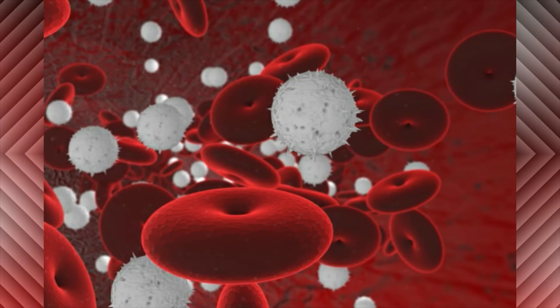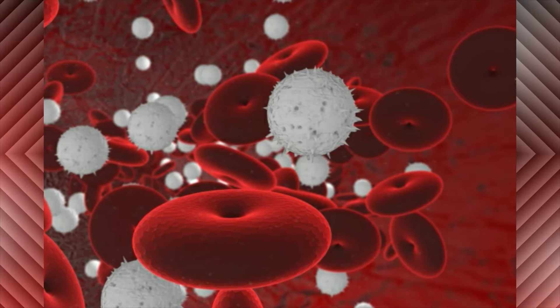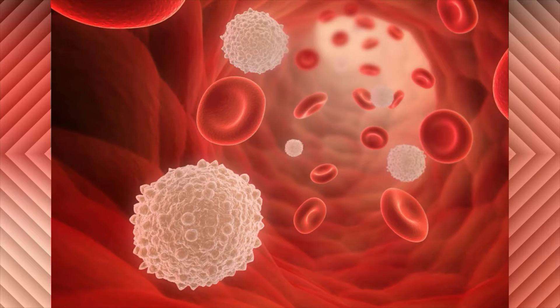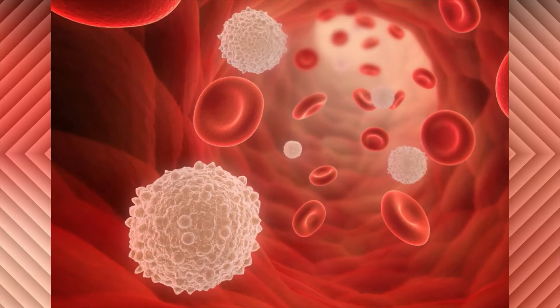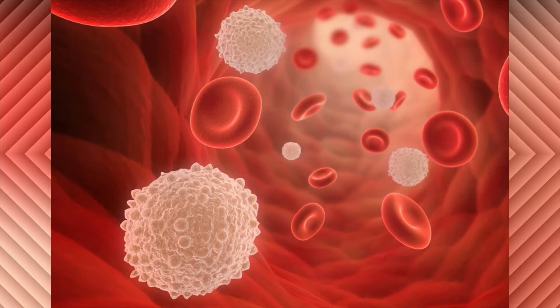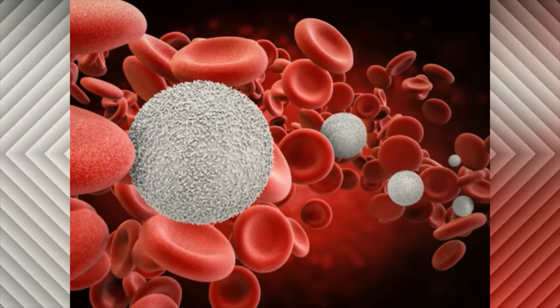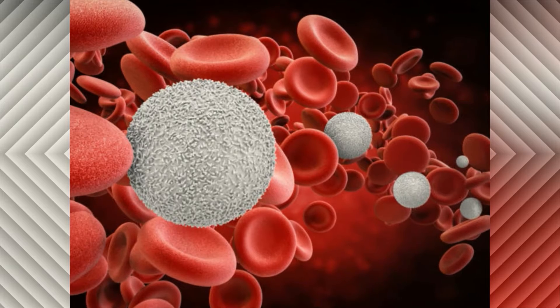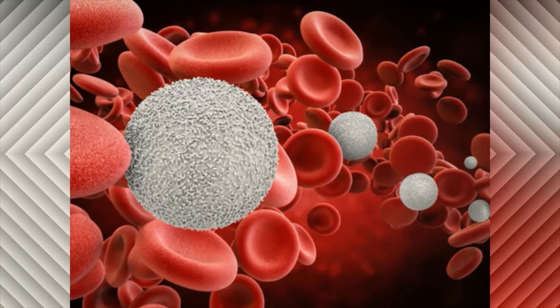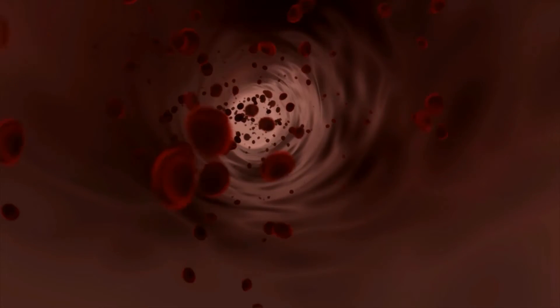White blood cells are also named leukocytes and amount for 1% of the human blood. Their role is to protect you against diseases and health problems. Just like red blood cells, they are generated by the bone marrow. Their role is to go through the bloodstream and attack any foreign bodies, including bacteria and viruses. Sometimes white blood cells will even go to various tissues and leave the bloodstream to fight diseases. That makes them extremely valuable for the human body.